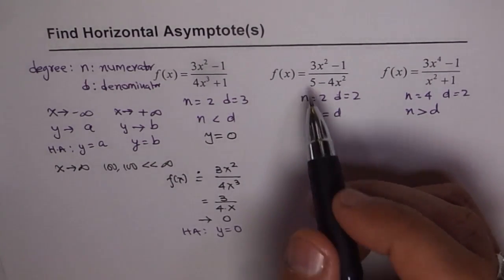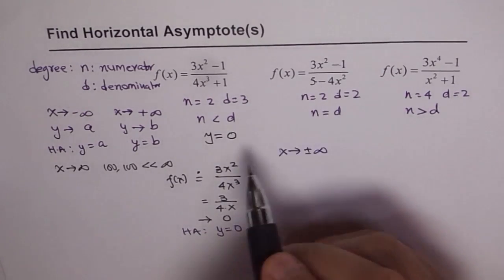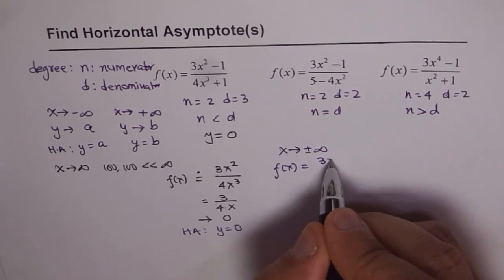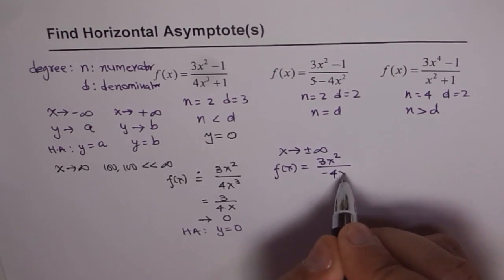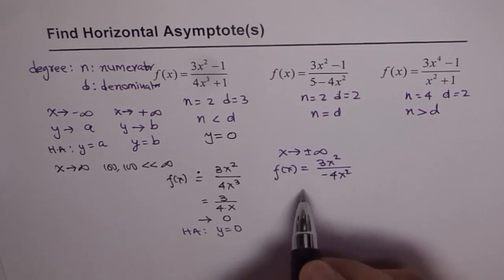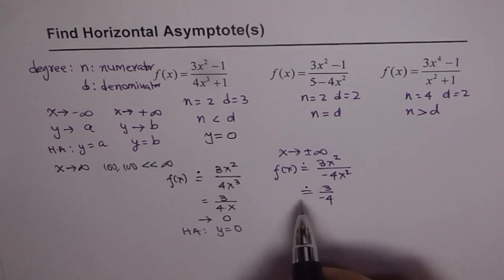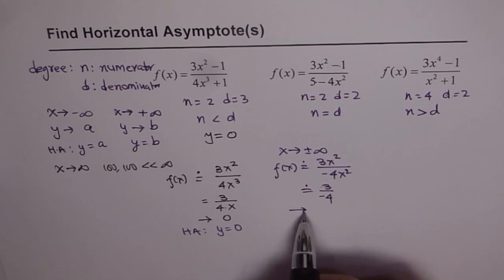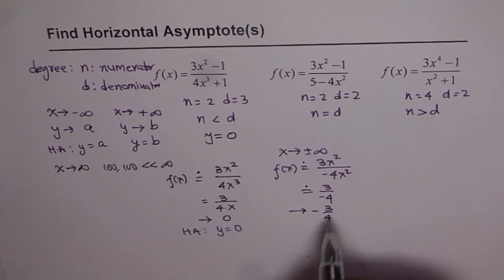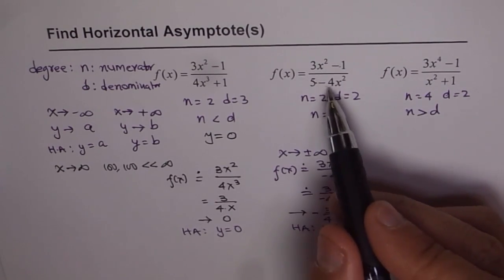Now let's consider the second function. As x approaches positive or negative infinity, these constant terms become small. We can write f(x) approximately as 3x squared over negative 4x squared. The x squared terms cancel and we get approximately 3 over negative 4, which equals negative 3 over 4. So the function approaches negative 3/4, and the equation of the horizontal asymptote is y equals negative 3 over 4. This is the ratio of leading coefficients.